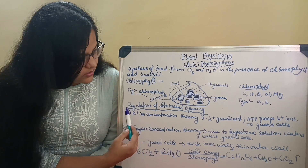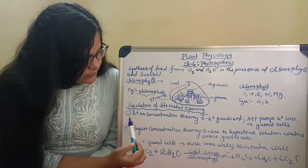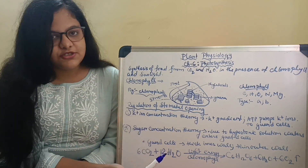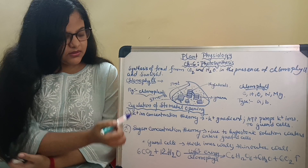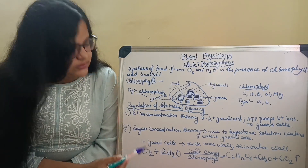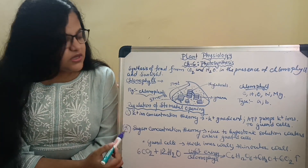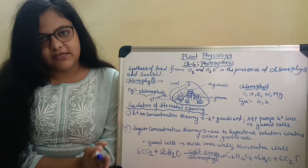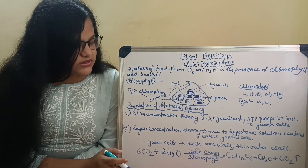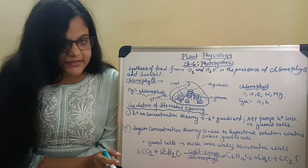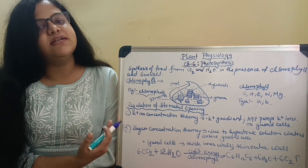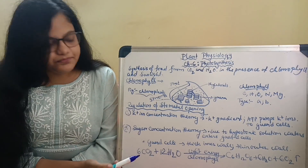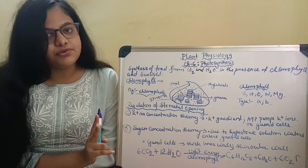We have already discussed the regulation of stomatal opening in previous chapters. But we haven't learned how the guard cell opens and closes. We discussed that in the morning the plants open the guard cell to take in CO2, then close it when the condition is flaccid at night. How that turgidity and flaccidity is controlled by the plant is divided into two theories.